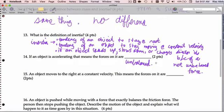Lastly, an object moves to the right at constant velocity, this means the forces on it are balanced. Awesome.